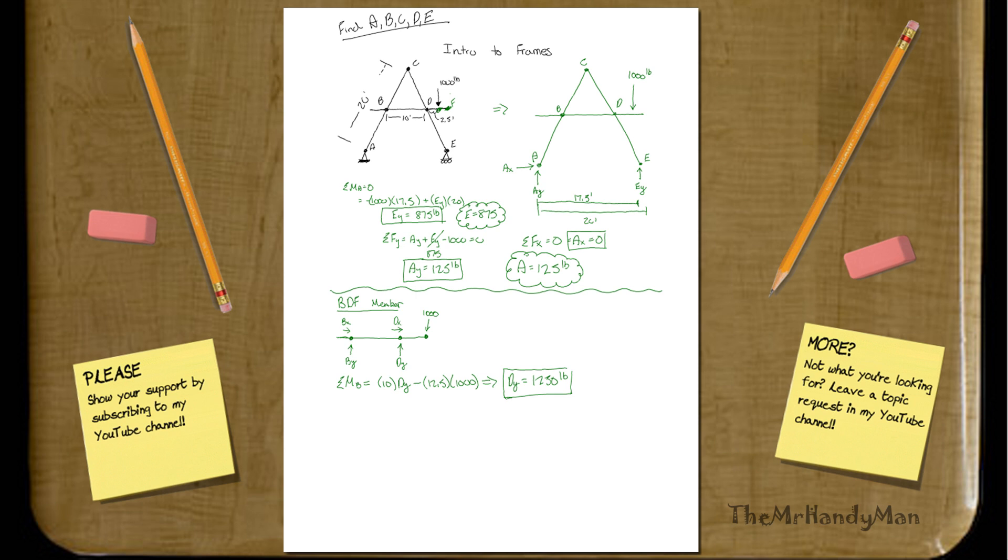Okay, so let's continue. We have sigma F_Y is equal to B_Y plus D_Y minus 1,000 equals zero. And then basically, we already know what D_Y is equal to now, so we can just toss that in, 1,250.